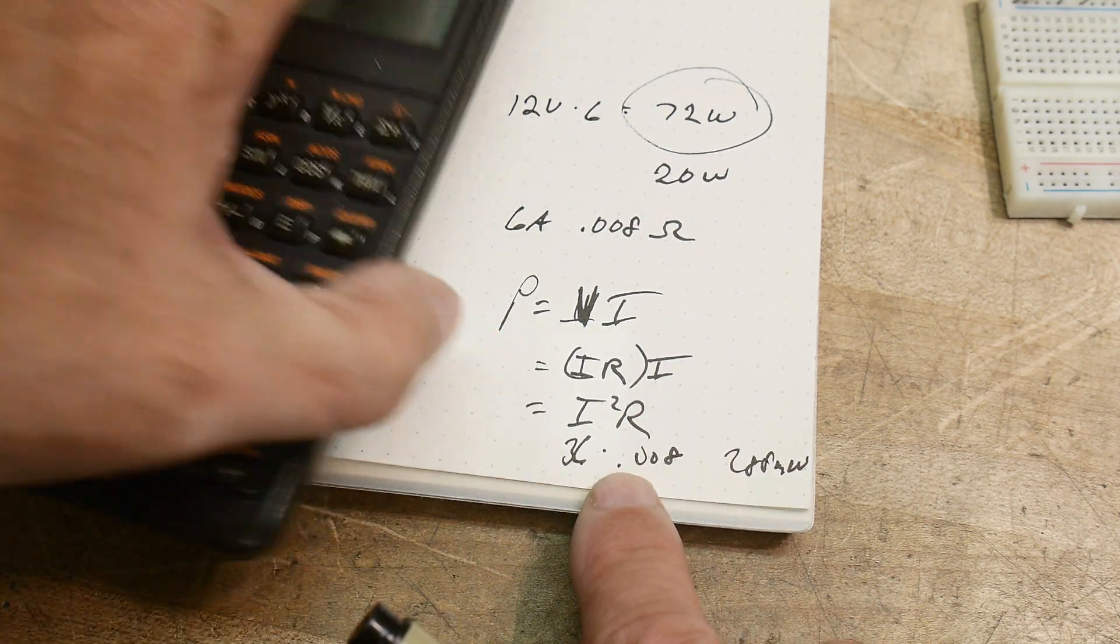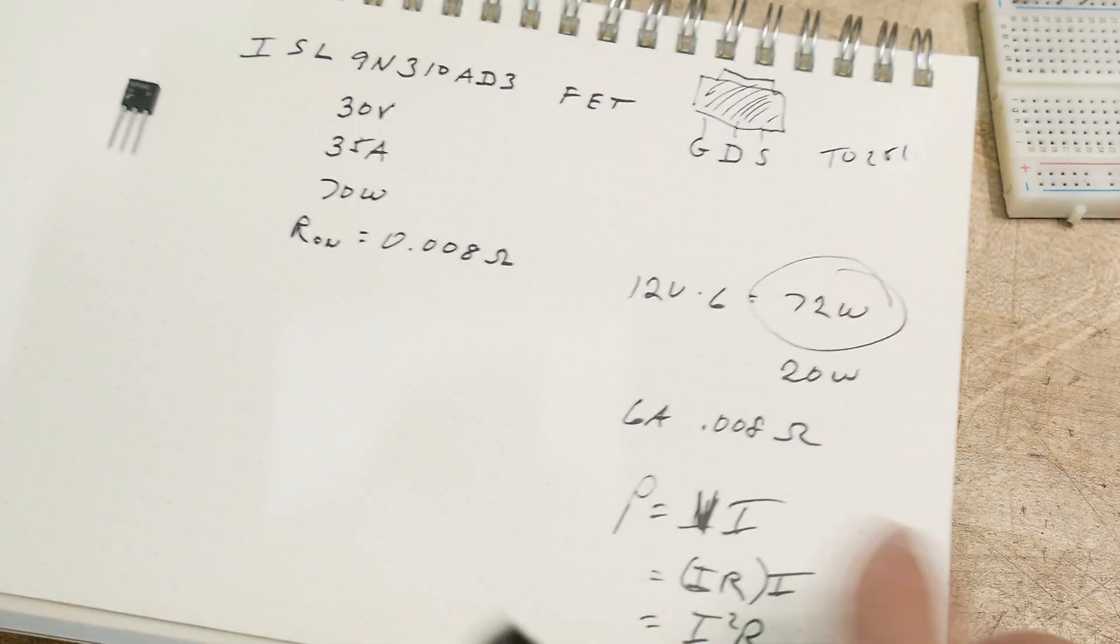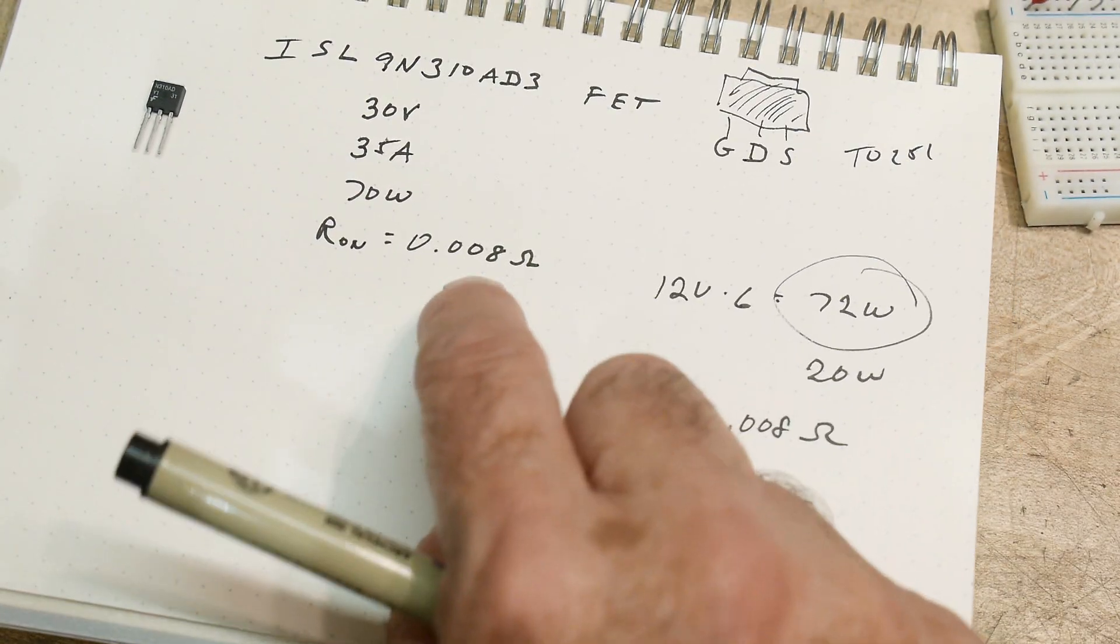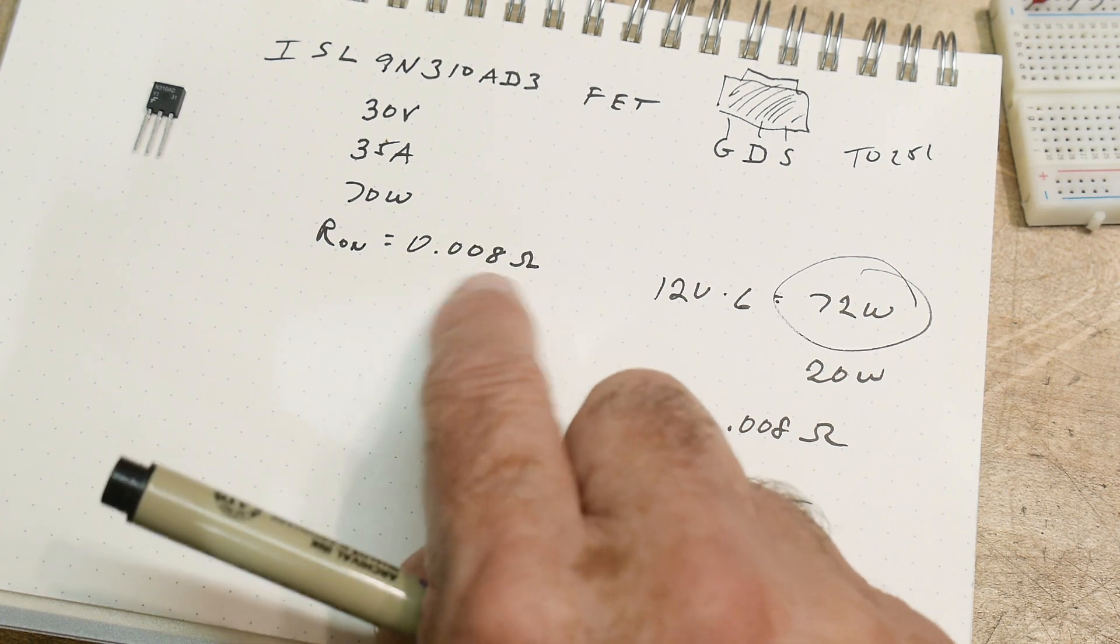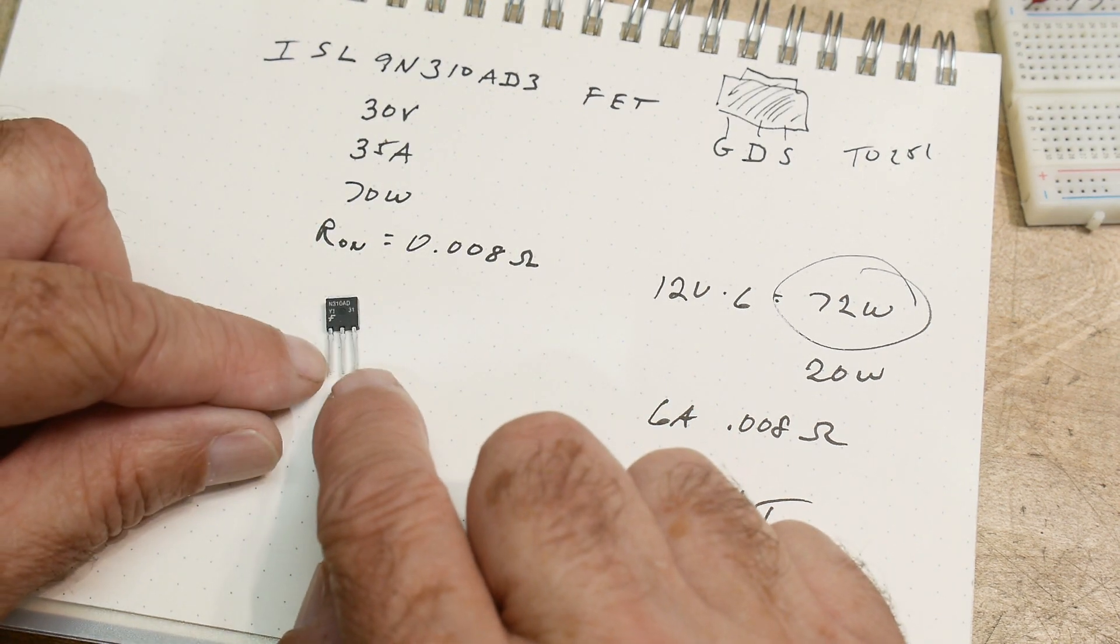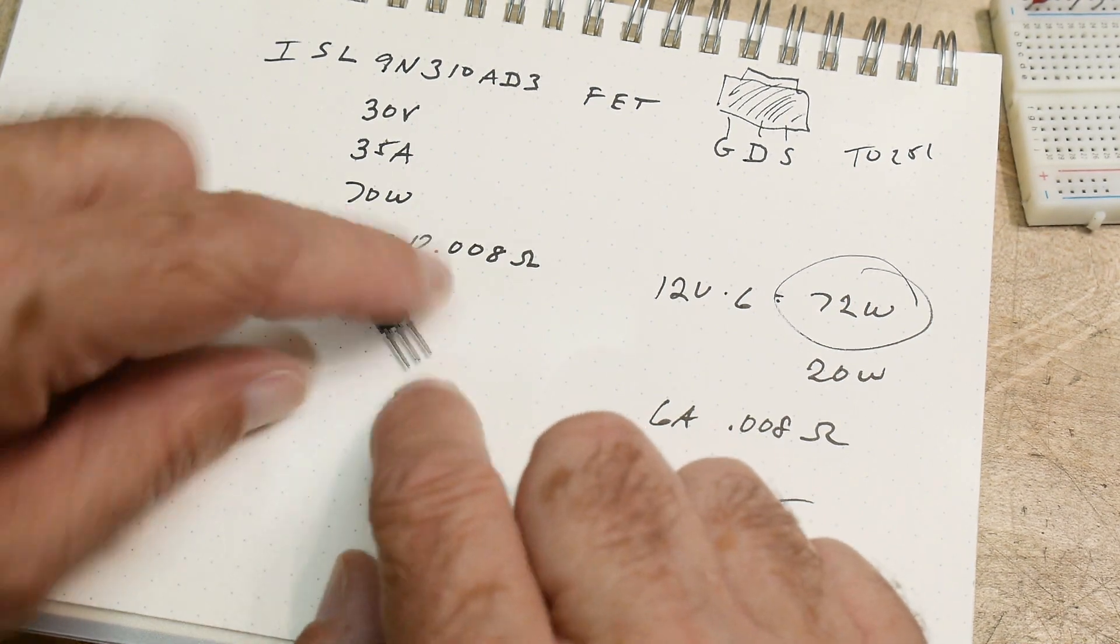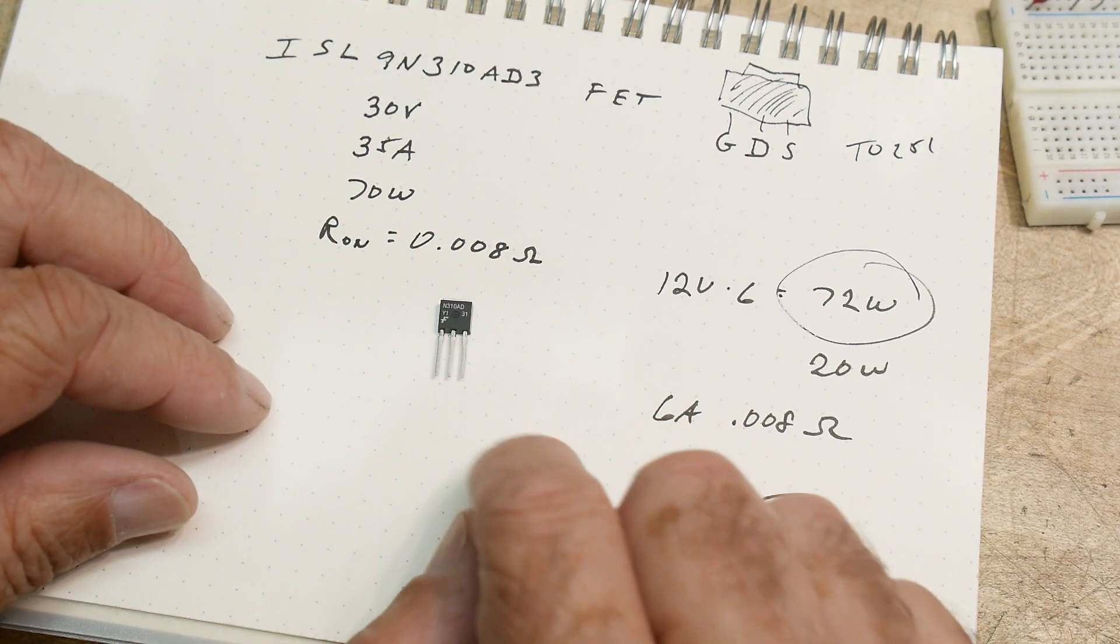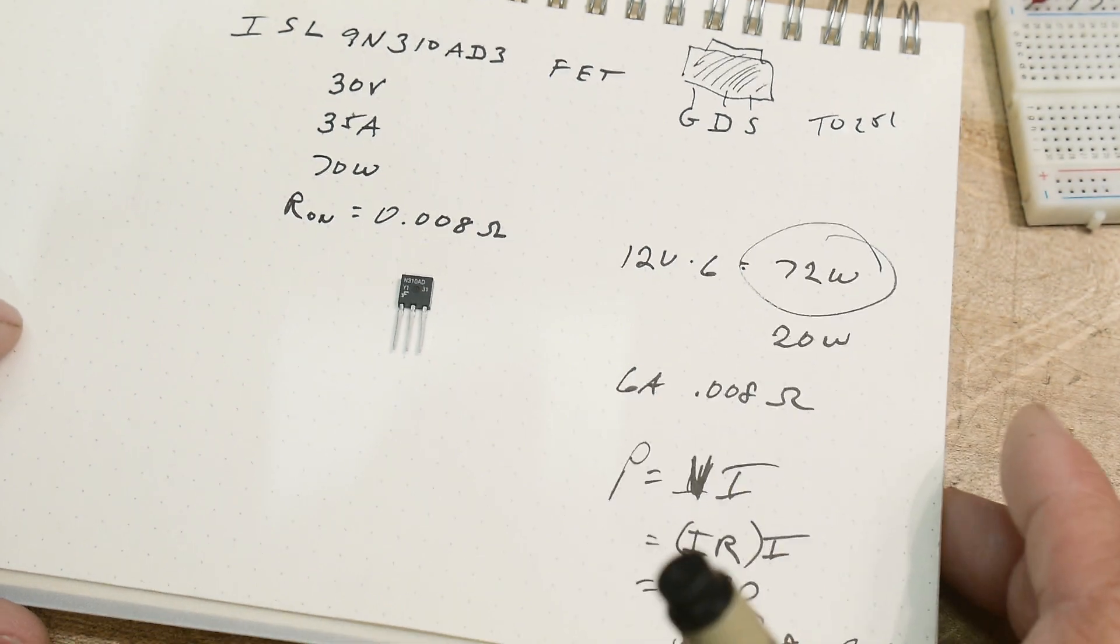That's why these N channel FETs are so great as you can get these incredibly low resistance numbers. I mean, that's just craziness. That's why I like these little parts. They're cute little part. They're tiny. They're easy to put on a board. And yeah, they work great.